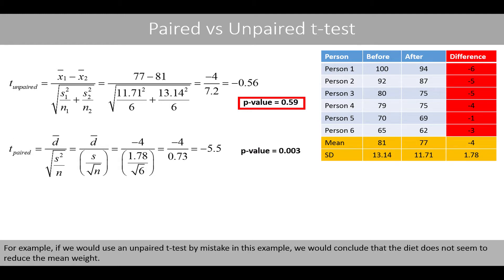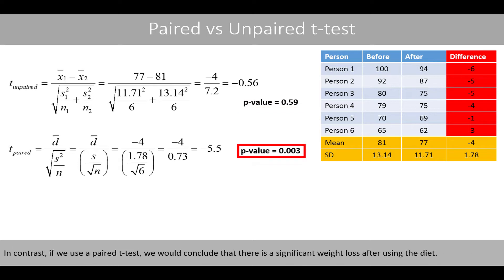For example, if we would use an unpaired t-test by mistake in this example, we would conclude that the diet does not seem to reduce the mean weight. In contrast, if we use a paired t-test, we would conclude that there is a significant weight loss after using the diet.